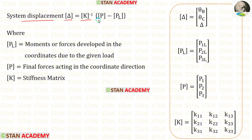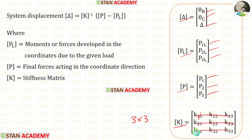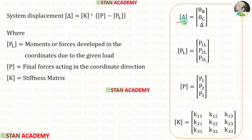We know the formula to find displacements: the delta matrix equals K matrix inverse times (P matrix minus PL matrix). In the delta matrix, PL matrix, and P matrix we will have three values because we have three coordinates. The size of the stiffness matrix will be 3×3. Inside the delta matrix we will have slope theta B, slope theta C, and sway delta. Now let us find the P matrix.